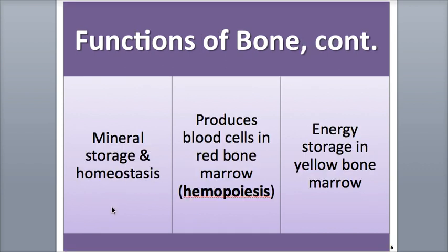A fourth function is mineral homeostasis. Because bone tissue makes up a significant percentage of the body's weight — about 18% — and due to its composition, bone is involved in mineral storage and release, calcium and phosphorus in particular, which provide much of the bone's strength. Bone is heavily vascularized and can easily release minerals into the blood and transport them to other areas of the body where they're needed, as well as to maintain overall mineral homeostasis, or balance.